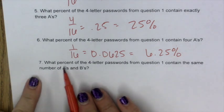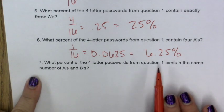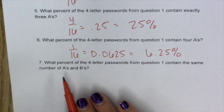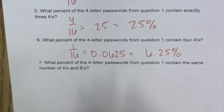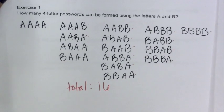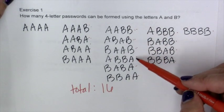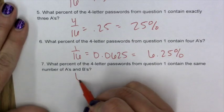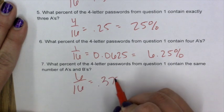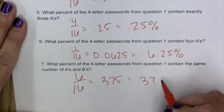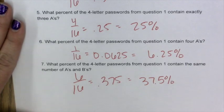And then finally, what percent of the four letter passwords from Question 1 contain the same number of A's and B's? So if we have a combination of four, that means two A's and two B's, which would be our middle column. 1, 2, 3, 4, 5, 6 out of 16, 0.375 or 37.5%.